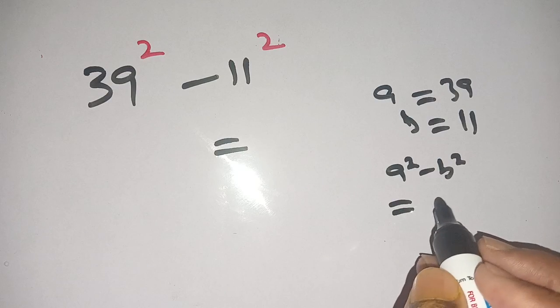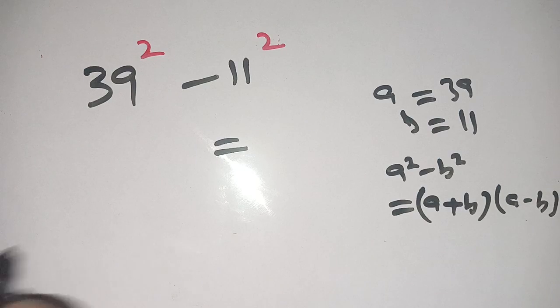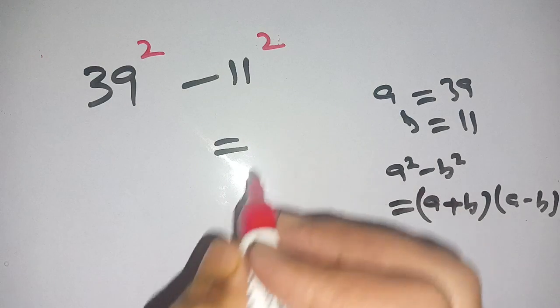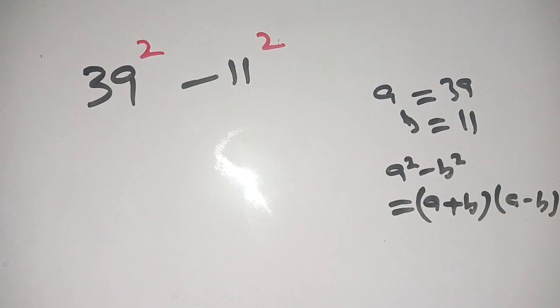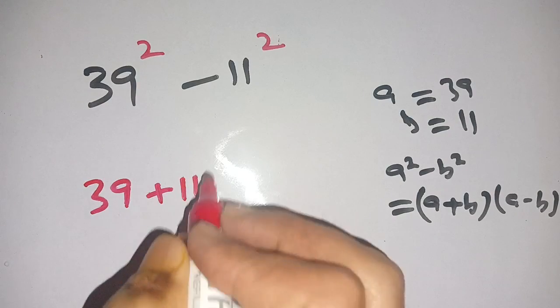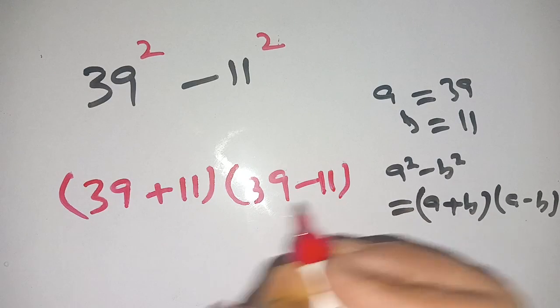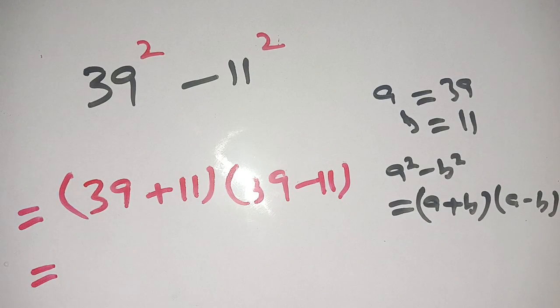And a squared minus b squared is equal to a plus b times a minus b. Thus we can write this as 39 squared minus 11 squared can be written as 39 plus 11 times 39 minus 11.